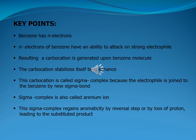Let's see some important key points for electrophilic aromatic substitution reactions which help develop the key mechanism. Benzene has pi electrons, and they have the ability to attack a strong electrophile, resulting in a carbocation generated upon the benzene molecule. The carbocation stabilizes itself by resonance — this carbocation is called a sigma complex because the electrophile is joined to benzene by a new sigma bond. The sigma complex is also called an arenium ion. The sigma complex regains aromaticity either by a reversal step or by loss of a proton, leading to the substituted product.